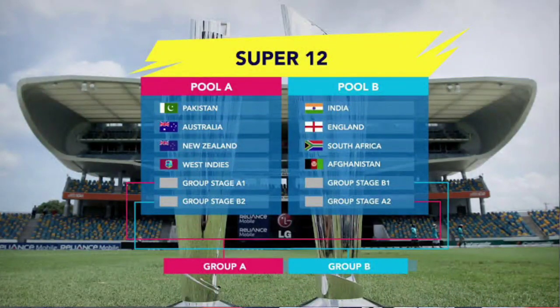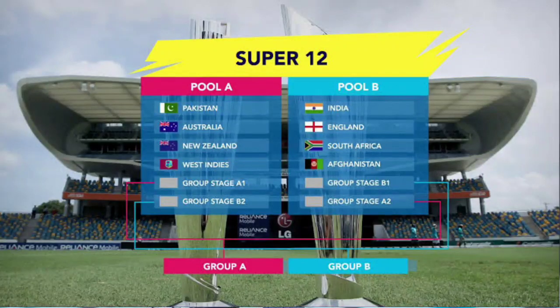In Group A, you can see Australia, New Zealand, West Indies, and Pakistan. This is Group A, which will determine the number one qualifier from that group.